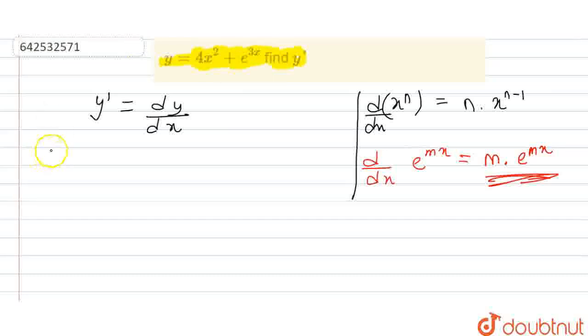The question is asking: y is equal to 4x square plus e to the power of 3x. So, what will be y dash?